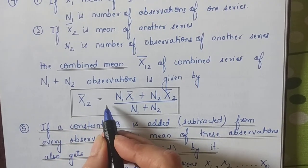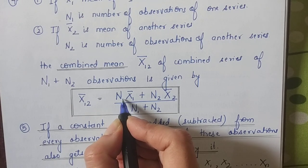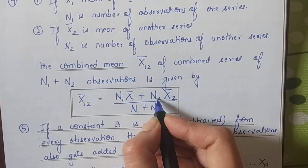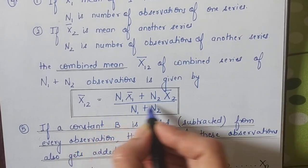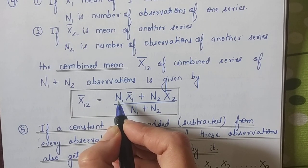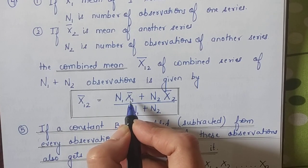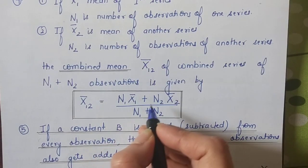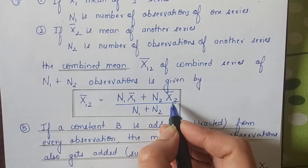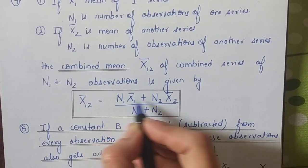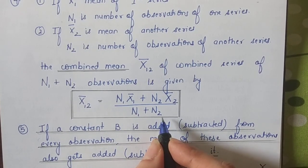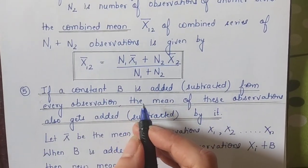The formula for combined mean will be x̄₁₂ = (n₁x̄₁ + n₂x̄₂)/(n₁ + n₂). That is, multiply series 1's number of items by its mean, plus series 2's number of items by its mean, and divide by the total number of items in both series.